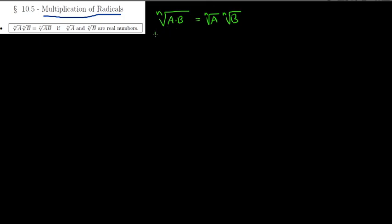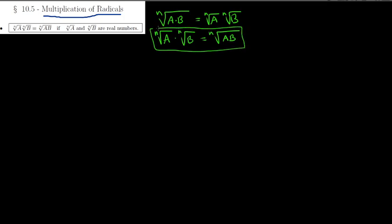But you can also go the other way — you can take the product of two radicals. As long as they're both the same index, so they're both square roots or both cube roots, then you are allowed to write it as a single square root or cube root of the product. So we're going to be using this. One important condition: the nth root of a and the nth root of b have to be real numbers — they cannot be imaginary. In this section, we're going to assume that a and b are both positive. All variables are positive.